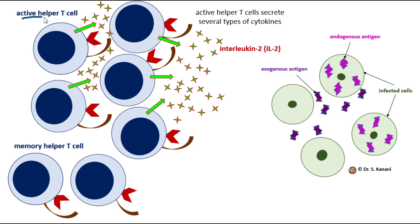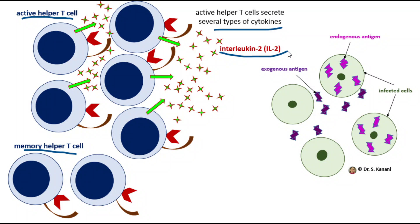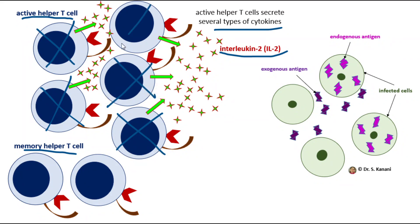After proliferation, we get an army of two groups of cells. One group is referred to as active helper T-cells or effector helper T-cells, and the other group is memory helper T-cells. The active helper T-cells get involved in the current battle and release a variety of cytokines, then die after several days. The memory helper T-cells do not get involved in the fight, which is why they survive — some with a lifespan of several decades.